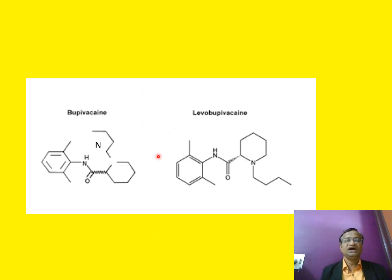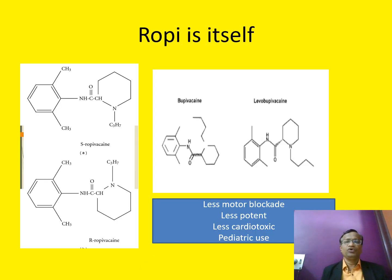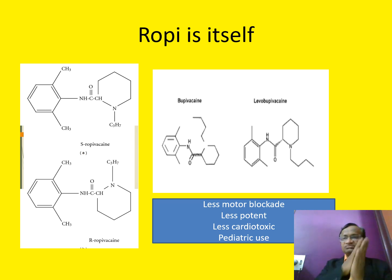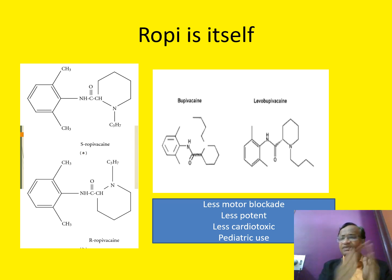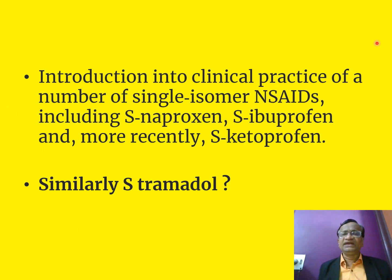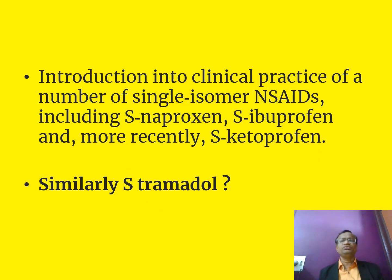Ropivacaine itself is different — we have only S-ropivacaine. The naming convention is shifting: dextro/levo isomerism is a type of optical isomerism related to plane polarization, while newer nomenclature uses R and S. Ropivacaine is S, and we have bupivacaine and levobupivacaine. Many single-isomer drugs have entered clinical practice: S-naproxen, S-ibuprofen, S-tramadol, and many others.